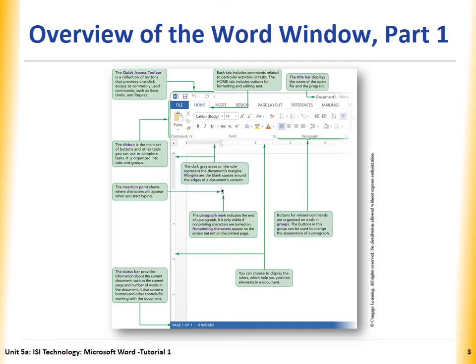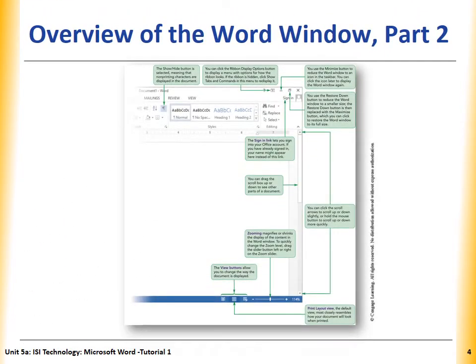Non-printing characters appear on the screen but not on the printed page. So if we print this document, we are not going to see this opposite P. Do you still remember the non-printing character? This button is to show or hide the non-printing characters. This one is the display option of the Ribbon. This one minimizes the page, this one maximizes it, and this one closes the page. Here is the Sign In link to sign into your account in Office.